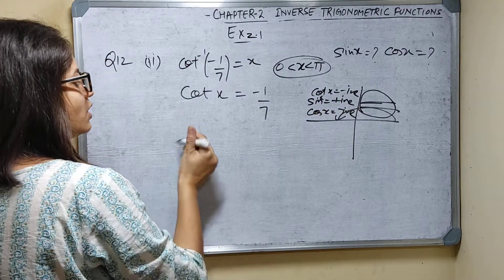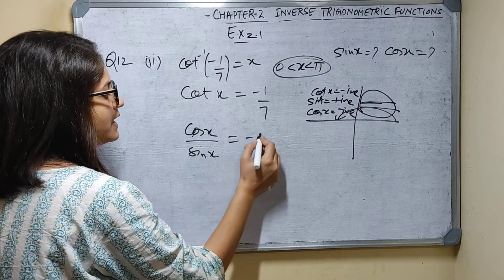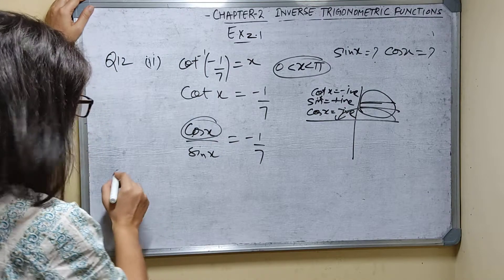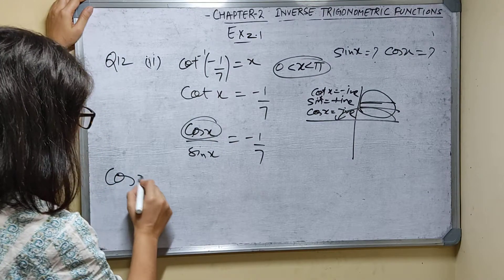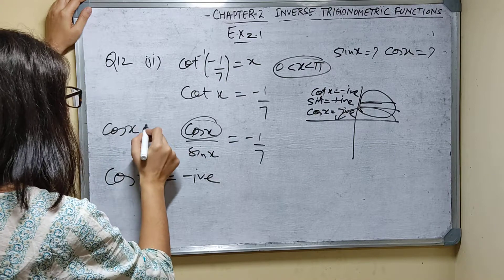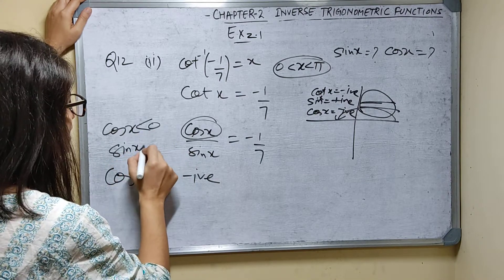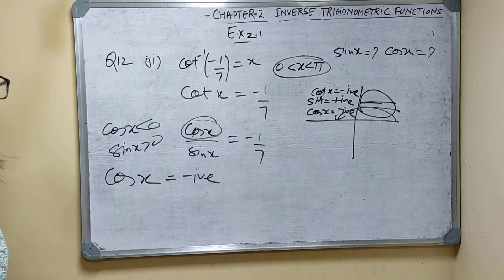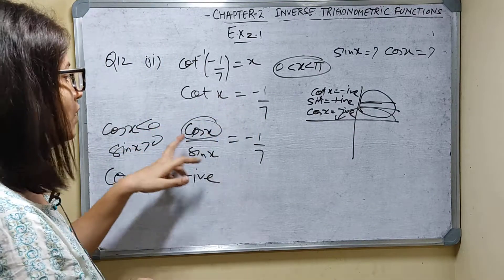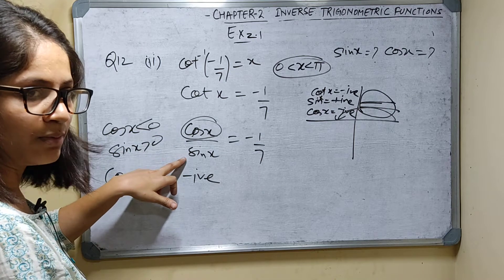Cot x is cos x upon sin x, which equals minus 1 by 7. Since it is in the second quadrant, cos x will be negative and sin x will be positive. So from cot x being negative, cos x will be negative and sin x will be positive.